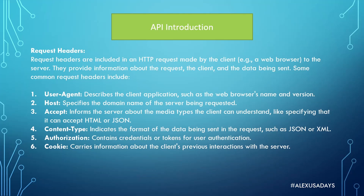Within the request you'll have request headers, which are included in an HTTP request made by the client to the server. They provide information about the request, the client, and the data being sent. Common request headers include: User-Agent, which describes the client application such as a browser's name and version; Host, which specifies the domain name of the server being requested; Accept, which informs the server about the media types the client can understand like HTML or JSON; Content-Type, which indicates the format of the data being sent such as JSON, HTML, or XML; Authorization, which contains credentials or tokens for user authentication; and Cookie, which carries information about the client's previous interactions with the server.